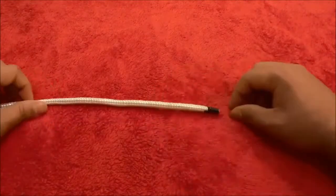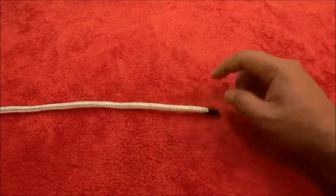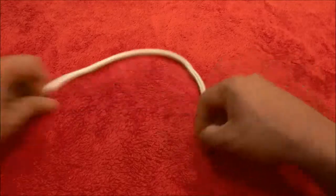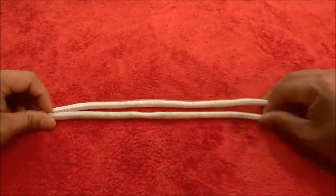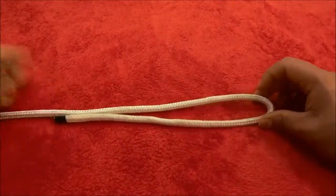The first step is to create a bite in the rope. As you can see, the end of the rope is on the right hand side, so I'm going to create a fairly large bite just like that.